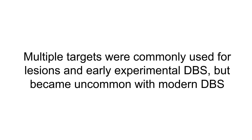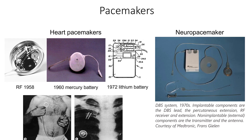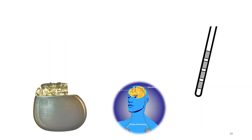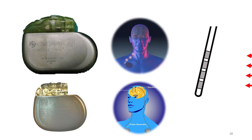So multiple targets were commonly used for lesions and early experimental DBS, but became uncommon with modern DBS. The explanation is probably quite simple: to make multiple lesions is simple, and to implant multiple electrodes with one contact for evaluation is rather simple. But to implant multiple quadripolar electrodes for chronic use, where each electrode needed a separate extension cable and a separate IPG, is much more complex and resource-demanding. For practical reasons, multiple targeting was limited to targets which could be encompassed by a single electrode, or in a few studies to a total of four electrodes after the introduction of newer IPGs capable of supporting two electrodes each.